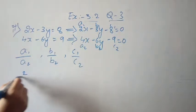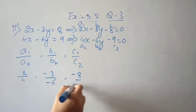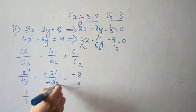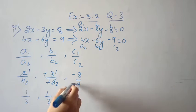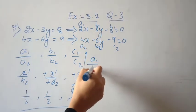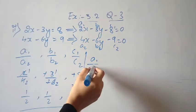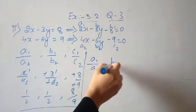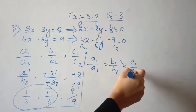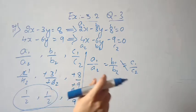So a1 is 2, a2 is 4, giving 2/4 which equals 1/2. b1 is minus 3, b2 is minus 6 — the negatives cancel — giving 3/6 which equals 1/2. And c1/c2 is minus 8 by minus 9, which gives 8 by 9. So a1/a2 equals b1/b2, but it is not equal to c1/c2.